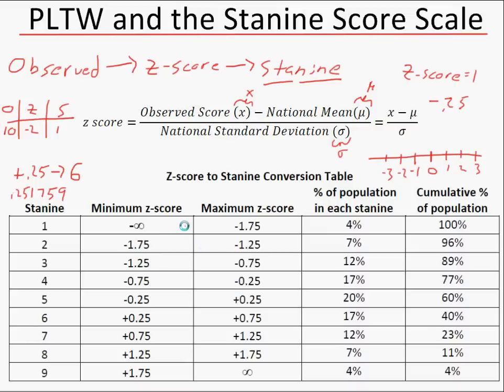We would do this for all students nationally — a student with a z-score of 0.60 gets a stanine of 6; a student with a negative 0.60 gets a stanine of 4. It's very easy to do once you have an Excel spreadsheet. Now I'm going to show an example of what you would do for a classroom — I'll show some observed test scores, convert them into z-scores, and then convert those z-scores into stanines.